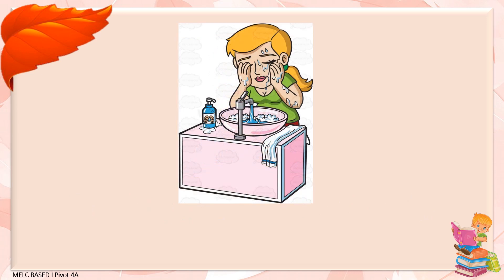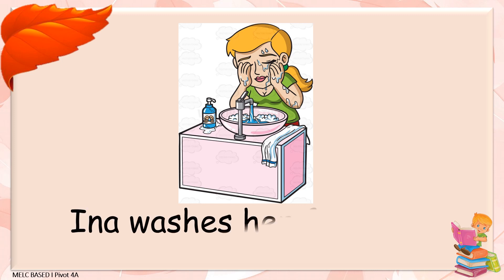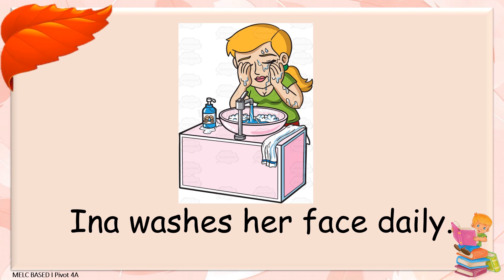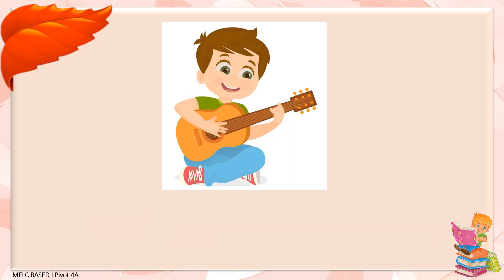Here's another picture — identify what is being done in the picture. The girl, whose name is Ina, washes her face daily. The verb or action word in the sentence is 'washes.' Here's another picture — identify what is being done in the picture.